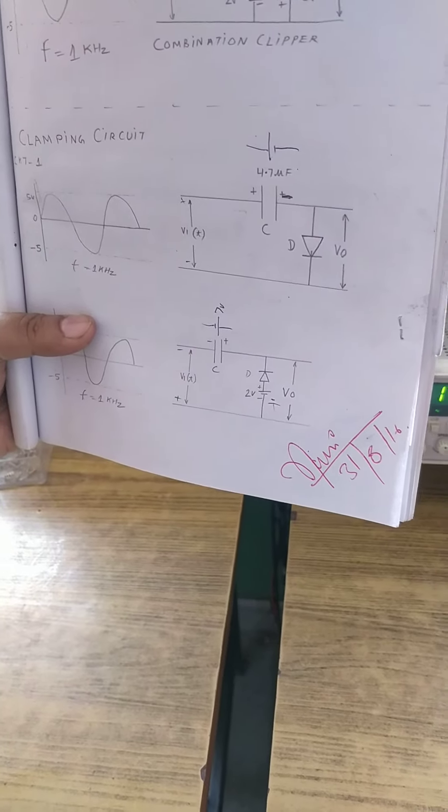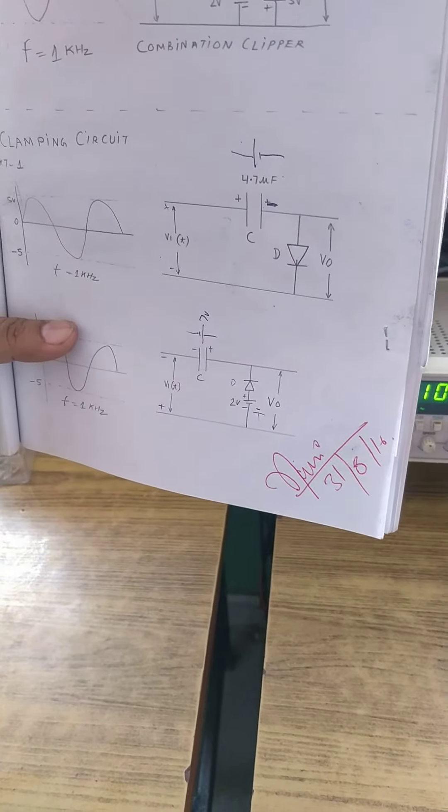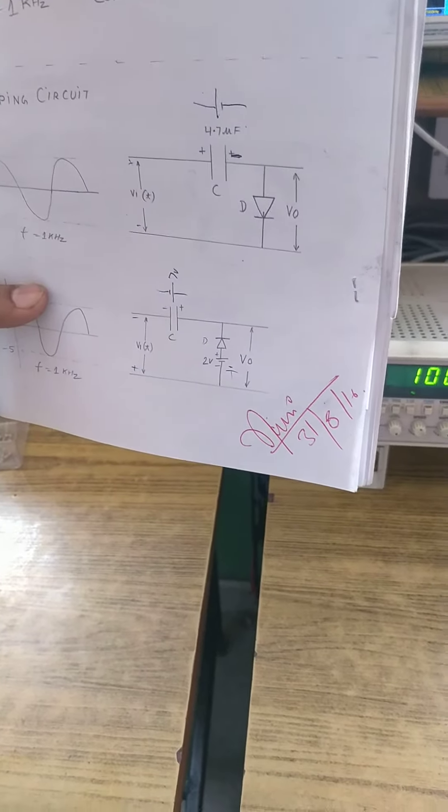But if you use battery, then there will be biased clamping. Biased in the sense that you do not shift complete positive or negative side towards one side.